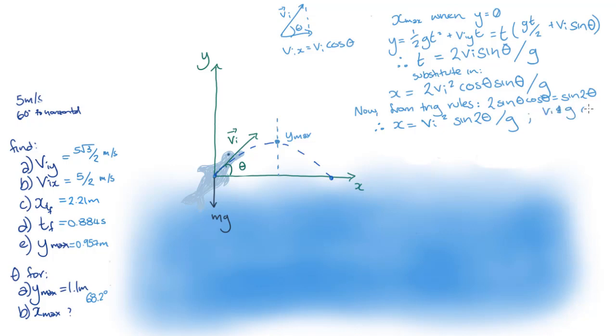Making this replacement, the range simplifies down to x equals vi squared times sine of 2 theta over g. Since vi and g are fixed, the maximum x occurs when sine of 2 theta is maximized. The greatest value that sine can ever have is 1, which occurs when the argument is 90 degrees. This means that 2 theta is 90 degrees when sine is 1, and the range is maximized, which means that theta is equal to 45 degrees. So at 45 degrees, the range of the dolphin's jump is the greatest it can be.